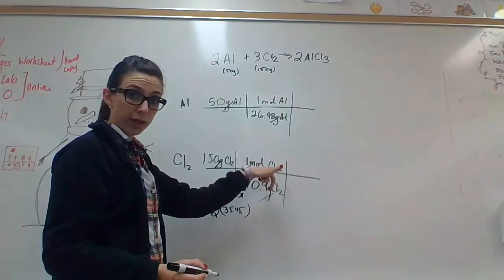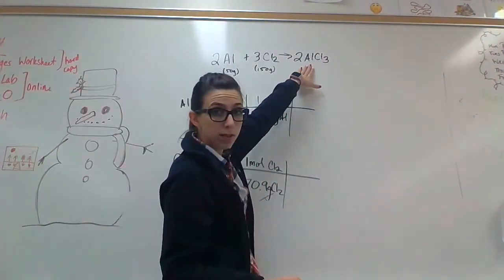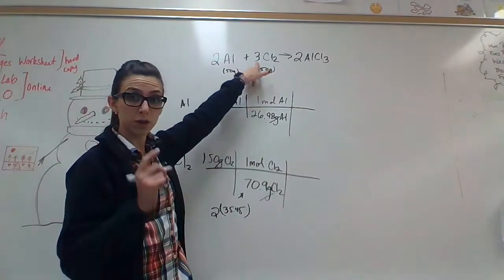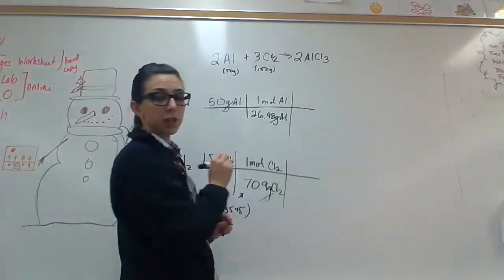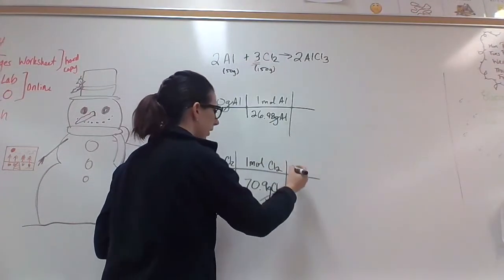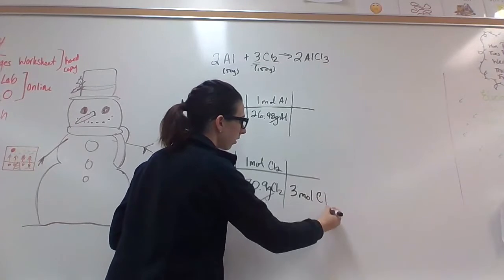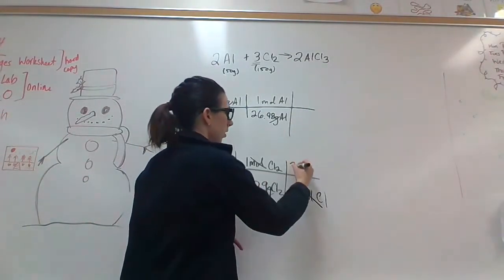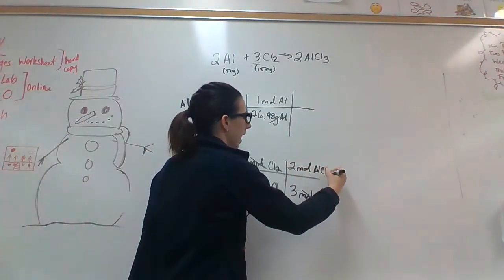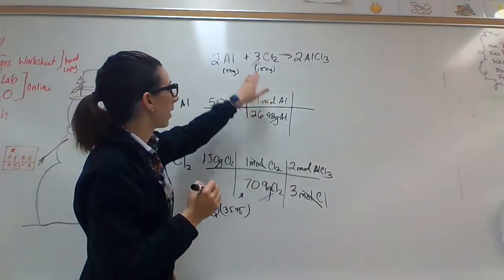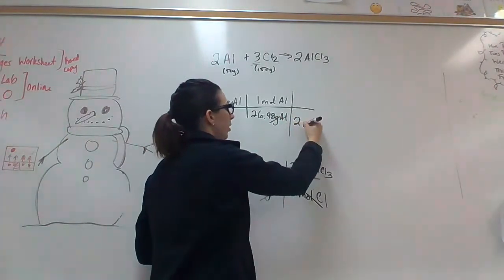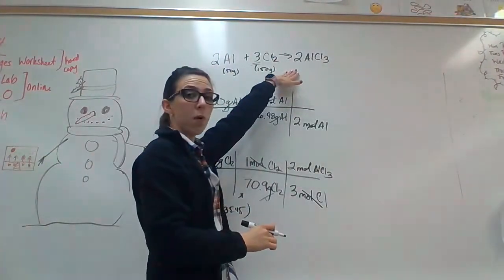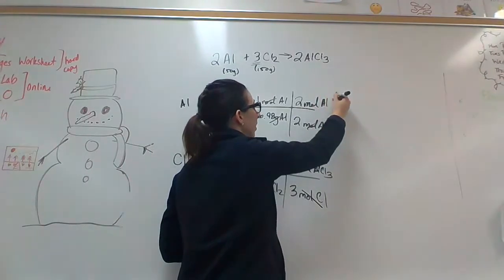So how many moles of chlorine are in the equation? There are three moles of diatomic chlorine. So you put three moles of Cl2 on the bottom — Cl2 is gone. For every three moles of Cl2, it produces two moles of AlCl3 in the products. For aluminum: two moles of aluminum, and for every two moles of aluminum, those two moles can produce two moles of AlCl3.